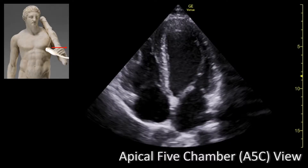Let's talk about this view in more detail. The apical 5 chamber view is pretty much just like the apical 4 chamber view except now we have visibility of the left ventricular outflow tract and the aortic valve.